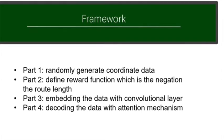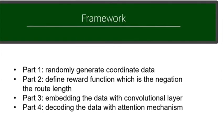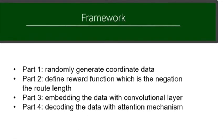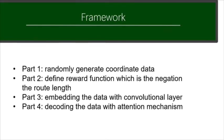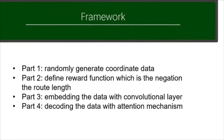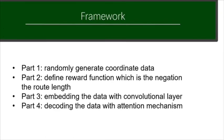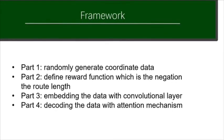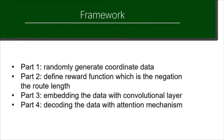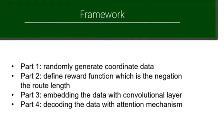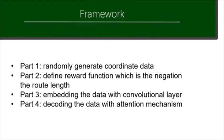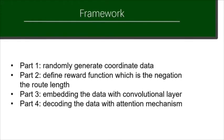Then we fit the customers and depot as a graph to a convolutional layer for embedding. And we assume that the vehicle is located at the depot at time zero. So the first input to the decoder is an embedding of the depot location. At each decoding step, the vehicle chooses from among the customer nodes or the depot to visit in the next step.